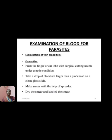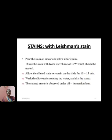Next is examination for blood parasites — examination using a thick blood smear. For thick smear preparation: prick the finger or ear lobe with a surgical cutting needle under aseptic conditions. Take a large drop of blood — larger than a pinhead — on a clean glass slide. Make a smear with the help of a splinter. Dry the smear and stain the blood smear.